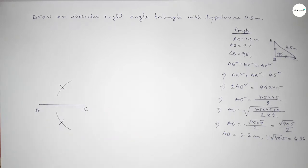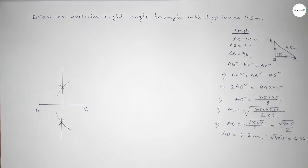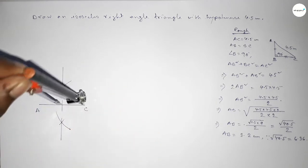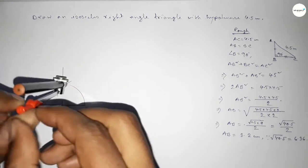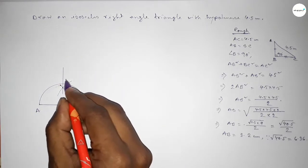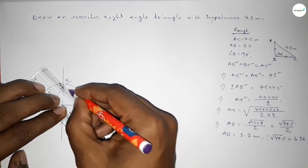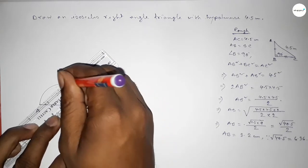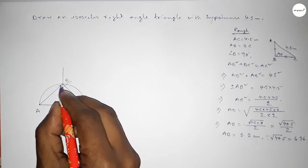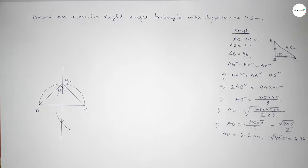Join the bisector line. Then place the compass at the midpoint O and take the distance OA (equal to OC) to draw a semicircle. The bisector and the semicircle meet at point B. Join C to B and A to B. We know that the angle in a semicircle is always 90 degrees.